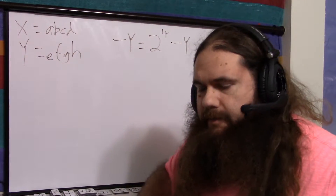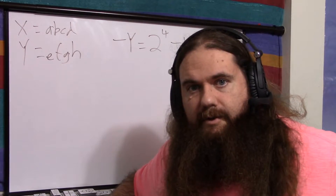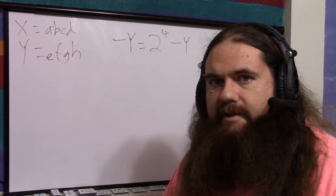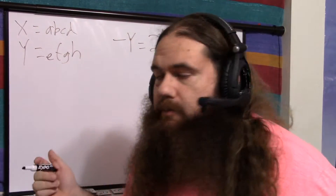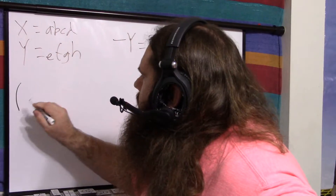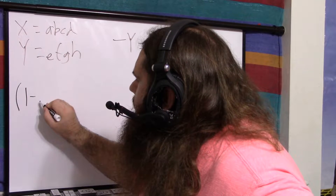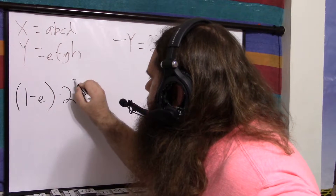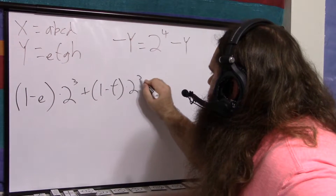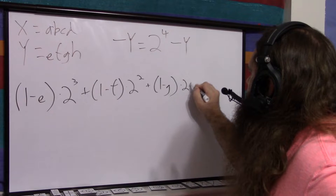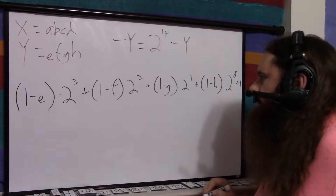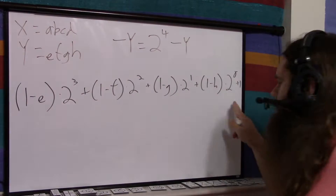So I've proven that this is reversible, and I've shown you using positional notation why inverting the bits and adding 1 is the same as this. But let's do a little bit of algebra to make it even more clear. We've already established that 1 minus the digit is the opposite bit. So if we take Y: 1 minus E (the first digit) times 2 to the 3, plus 1 minus F times 2 to the 2, plus 1 minus G times 2 to the 1, plus 1. I've flipped all the bits, and I've added 1.